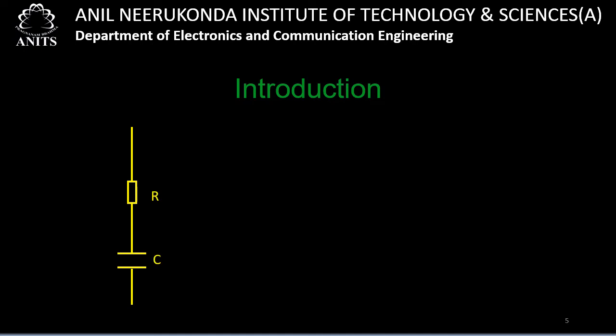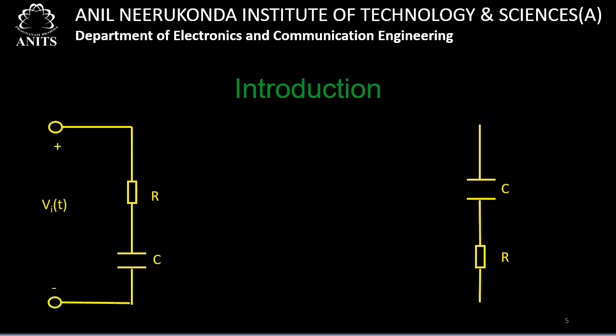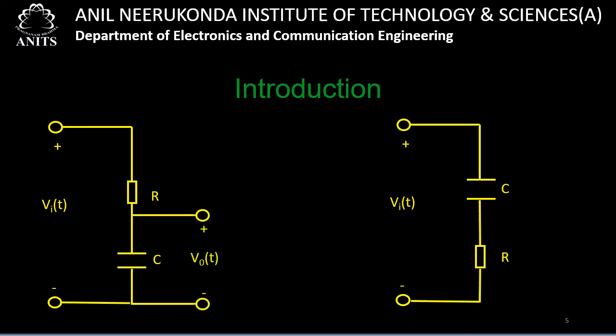Let us consider two elements R and C in series. An input vi(t) is applied to this circuit. Both circuits look the same at first, and the difference depends on where the output is taken. If the output is taken across the capacitor C, we call it an RC low pass filter circuit.